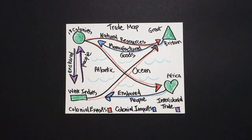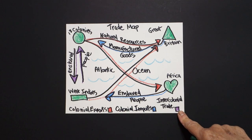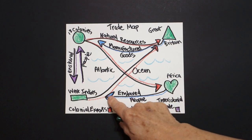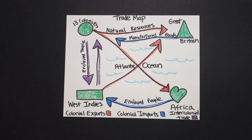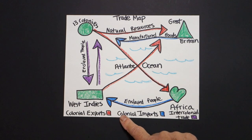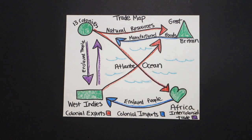Use your colors down here at the bottom: colonial exports are red, colonial imports are blue, and intercolonial trade is purple. Here is my trade map all colored in. Remember, you're doing colonial exports, colonial imports, and intercolonial trade — that's what this is showing and representing. Bye-bye.